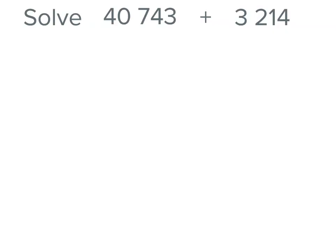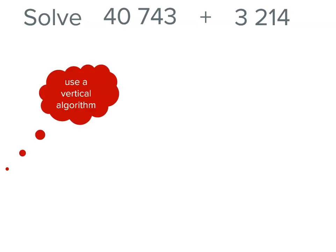Let's add some large numbers now, starting with these. We're going to solve 40,743 plus 3,214. We're going to use a vertical algorithm, and a clue is vertical. It goes down the page. And an algorithm is just where we have steps or procedure.